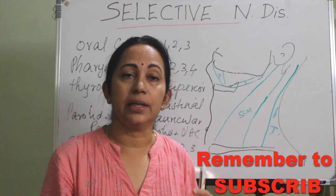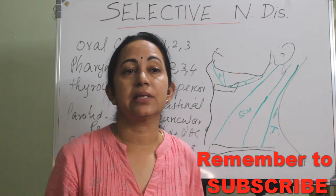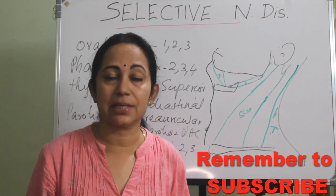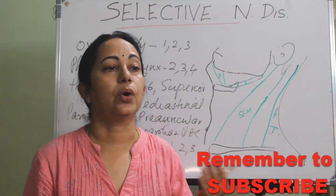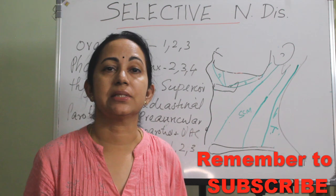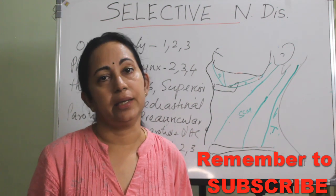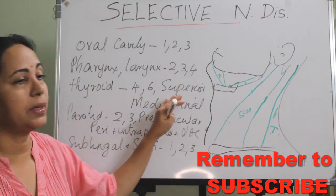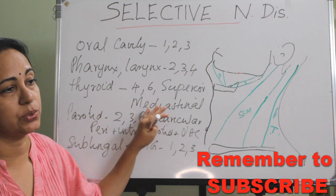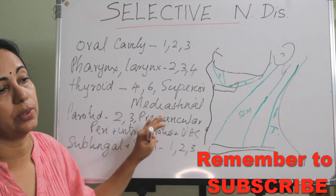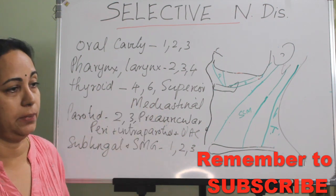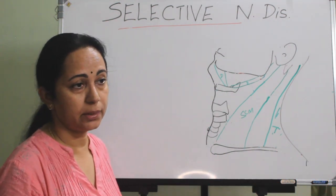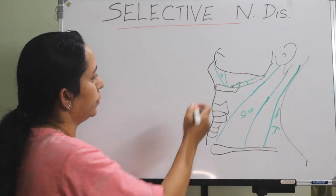Selective neck dissection cannot be done in a previously treated neck, previous surgery, or a previously irradiated neck. It is usually done only in case of an N0 neck, along with removal of the primary tumor.